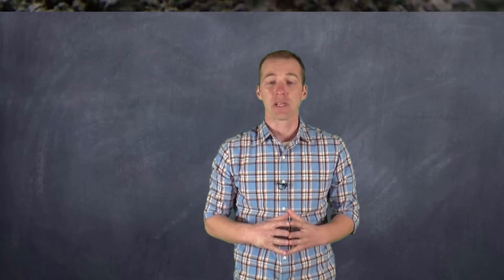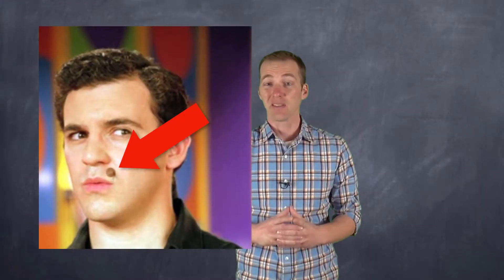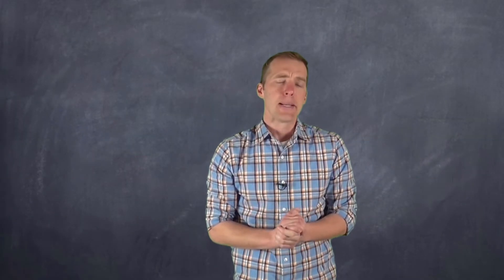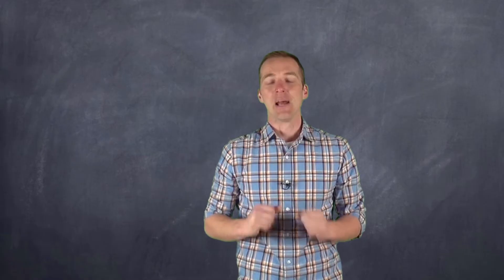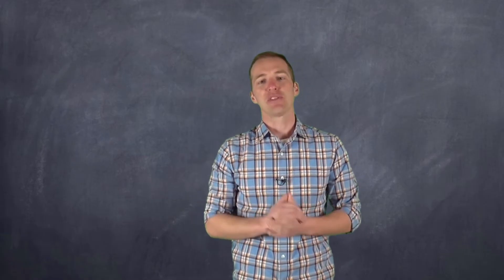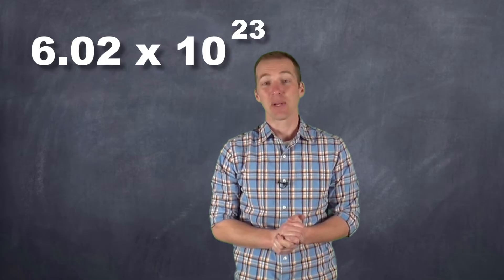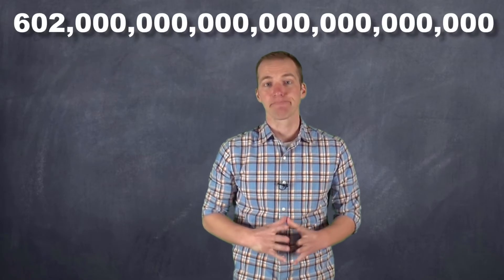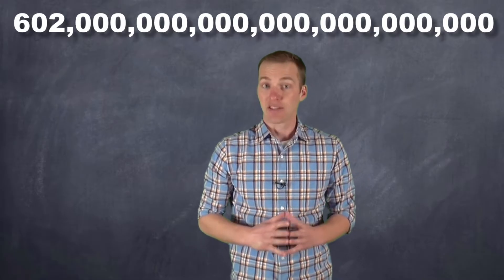Now when you think of a mole, you might think of this, or maybe this, or if you're into Mexican food, maybe this. Mole! But when chemists think about the mole, we think about a number. And that number is 6.02 times 10 to the 23. Yeah, that's a really big number. How big is it? Well, it's this big — it's a lot of zeros.